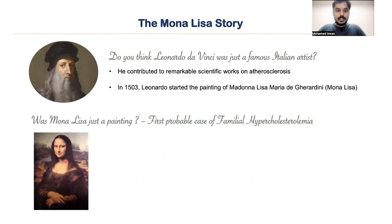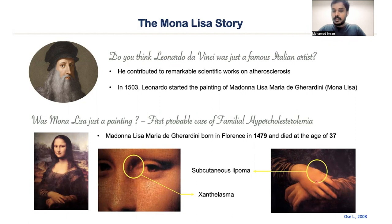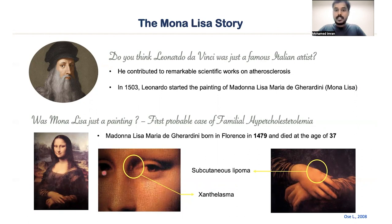How many of you know that Mona Lisa can be a probable case for familial hypercholesterolemia? If you can see the image, you will be able to see a nodule around her right side of her eye, and you will be able to see a swelling on the upper part of her right hand. The nodule is xanthelasma, and the swelling is subcutaneous lipoma. This observation was made several years later, and it is one of the clinical manifestations for familial hypercholesterolemia. Mona Lisa might be the first probable case of familial hypercholesterolemia to be reported.